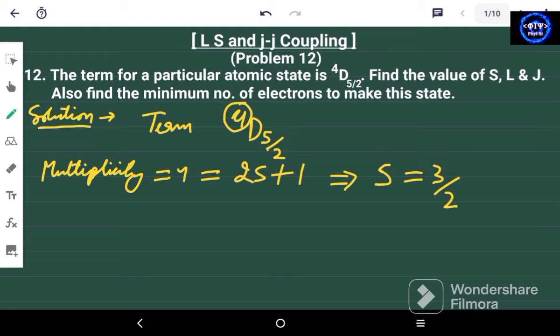Now it is a D state. For D state, the value of capital L is actually equal to S, P, D, F. We have S, P, then D, then F.